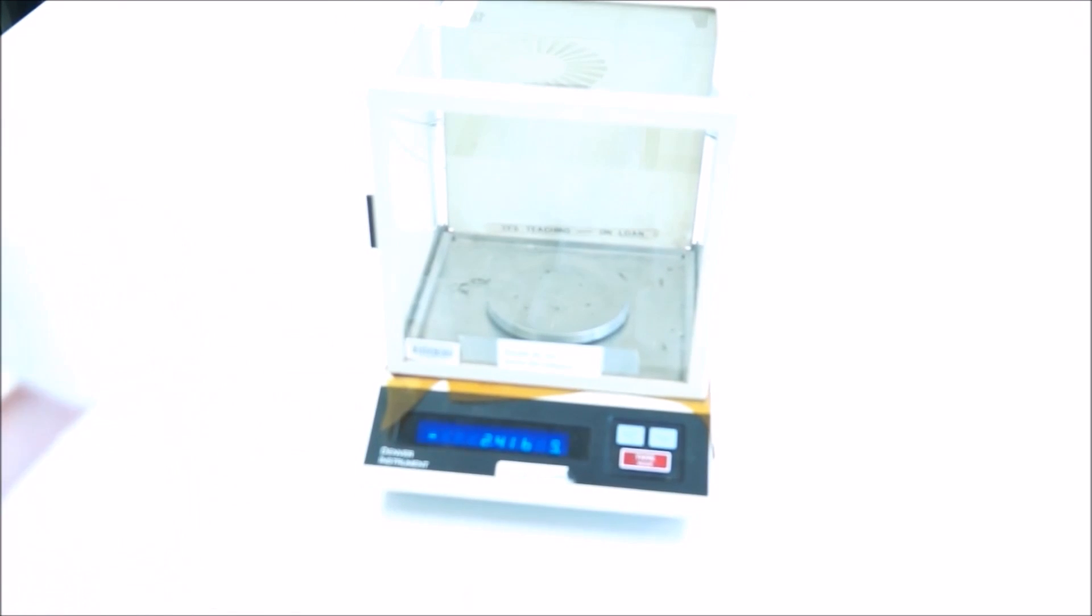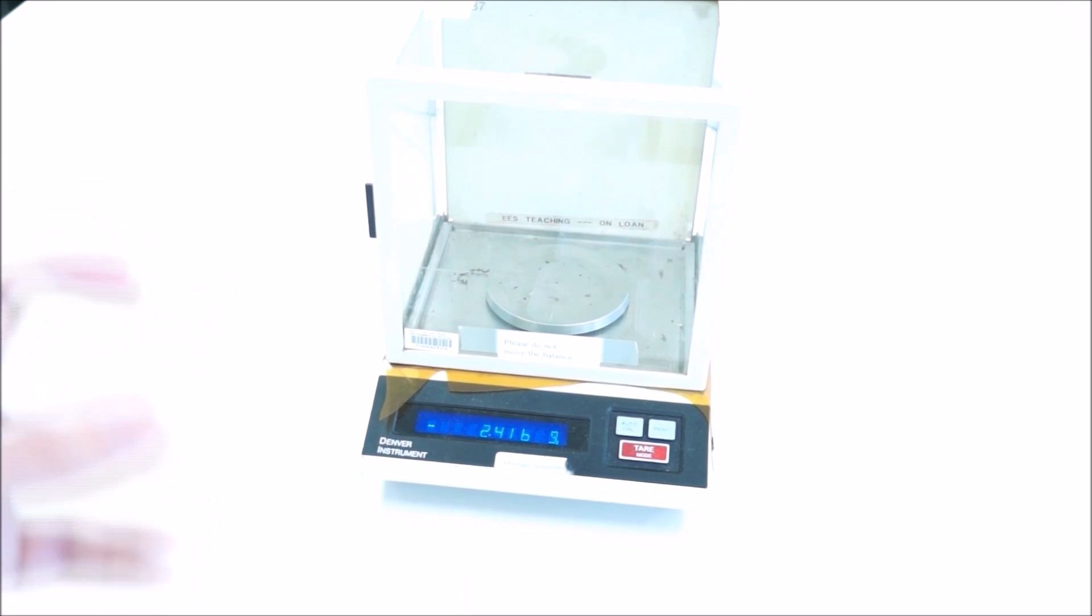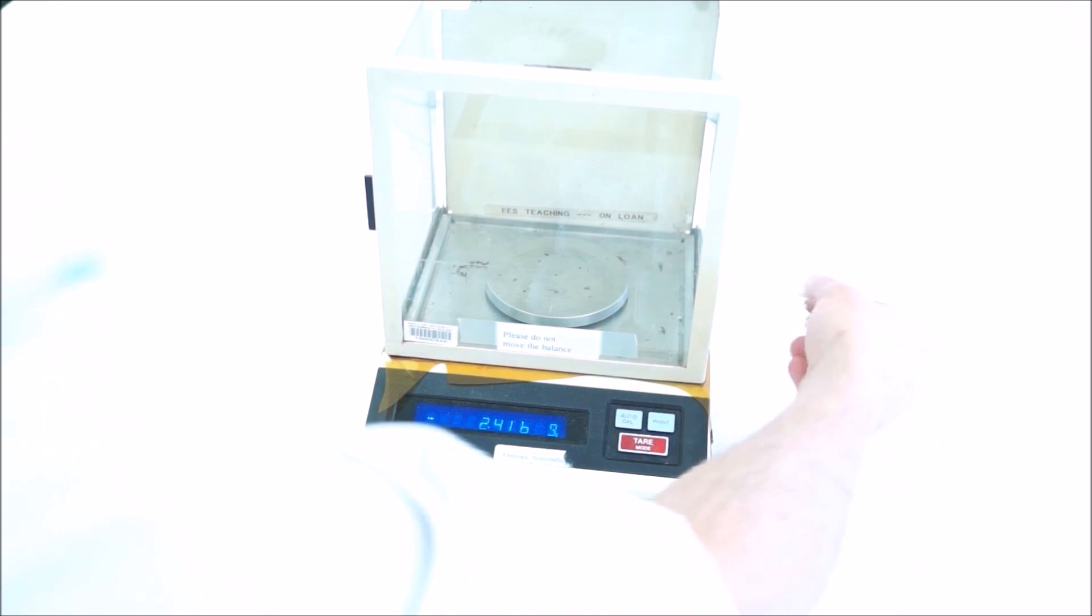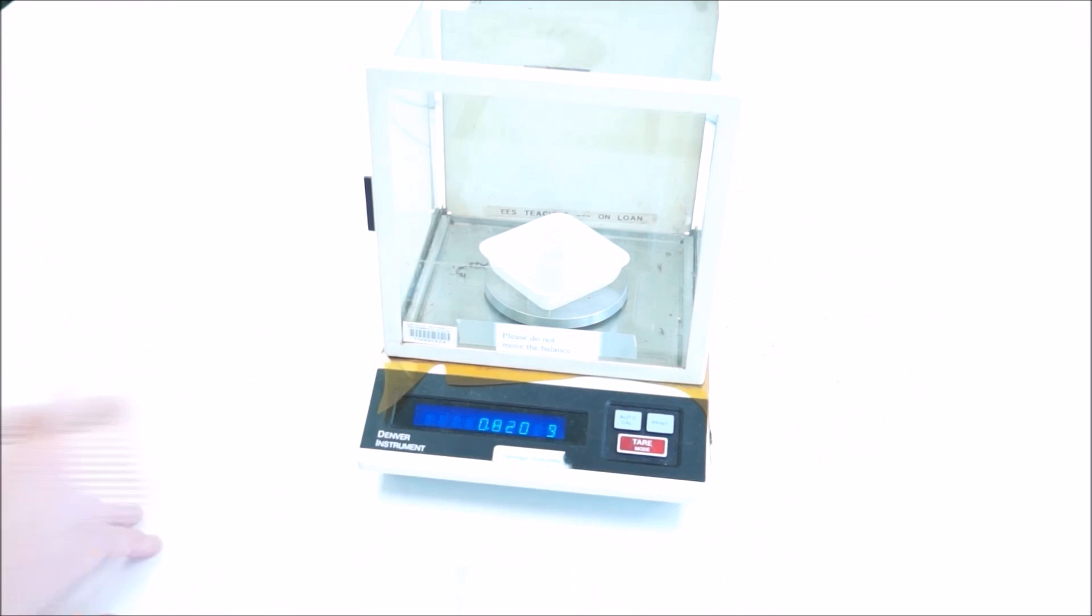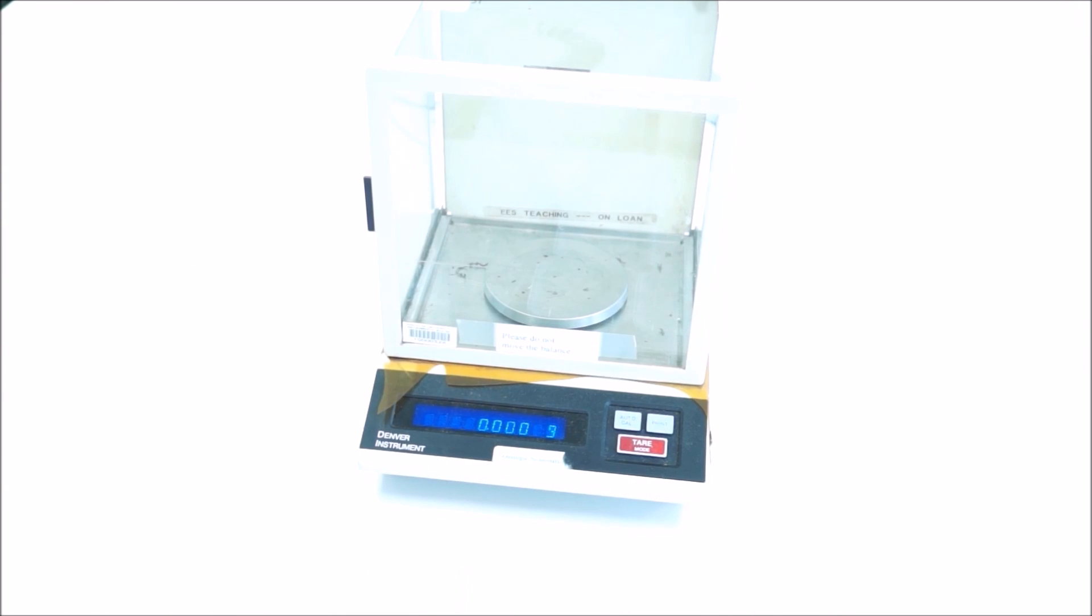Then what you should do is take each of these dishes and weigh the mass, because individually they'll be slightly different. You'll be able to zero, set that to zero, measure the mass of the dish—2.291—so write that on the edge of the dish so you can remember what it is. 2.291 grams, and probably write moss number one or whatever it's going to be.